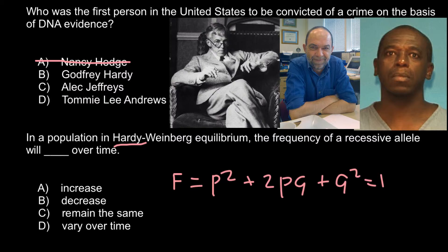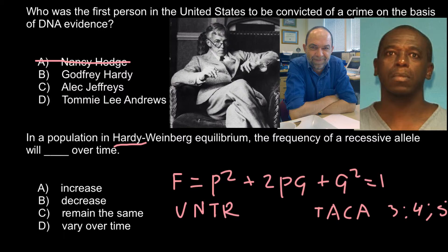In about 1984, Alec Jeffries invented a method of identifying people using variable fragments on different chromosomes. Some chromosomes contain regions where each person has a variable number of tandem repeats (VNTRs). A tandem repeat is any sequence — for example, TACA — that may be repeated three, four, or five times at a particular locus, with different people having different numbers of repeats.